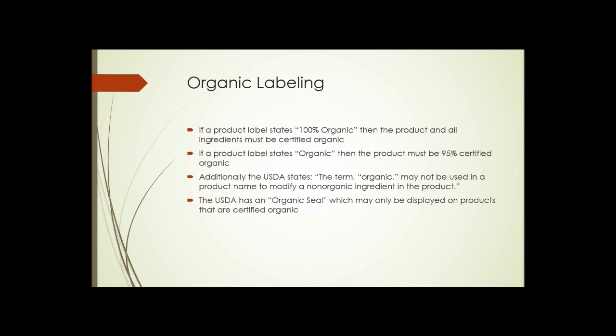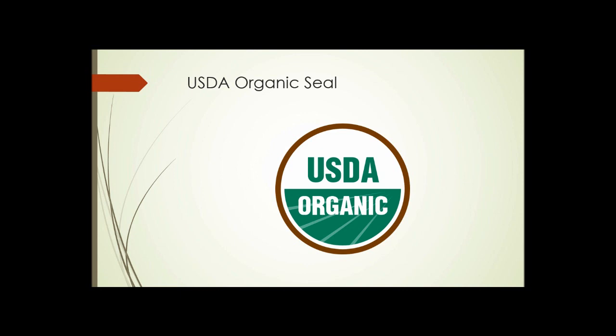Organic labeling: there are different levels of labeling that may contain the word 'organic.' If a product label states '100% organic,' then the product and all of its ingredients must be certified organic. If a product label simply states 'organic,' then the product must be 95% certified organic. Additionally, the USDA states that the term 'organic' may not be used in a product name to modify a non-organic ingredient. The USDA has an organic seal which may only be displayed on products that are certified organic — if you see this seal on a product, that product is certified organic within the limitations of what that means.